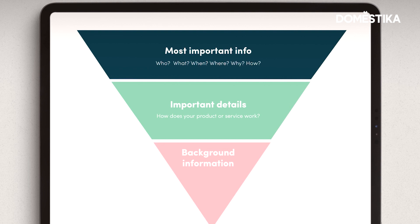This top section is like the main headline. Underneath that, we include some important details about your product — how to use it, a bit about your main service. And then as we go further down the page, we can include more information: longer pieces of text and things that aren't quite as striking.